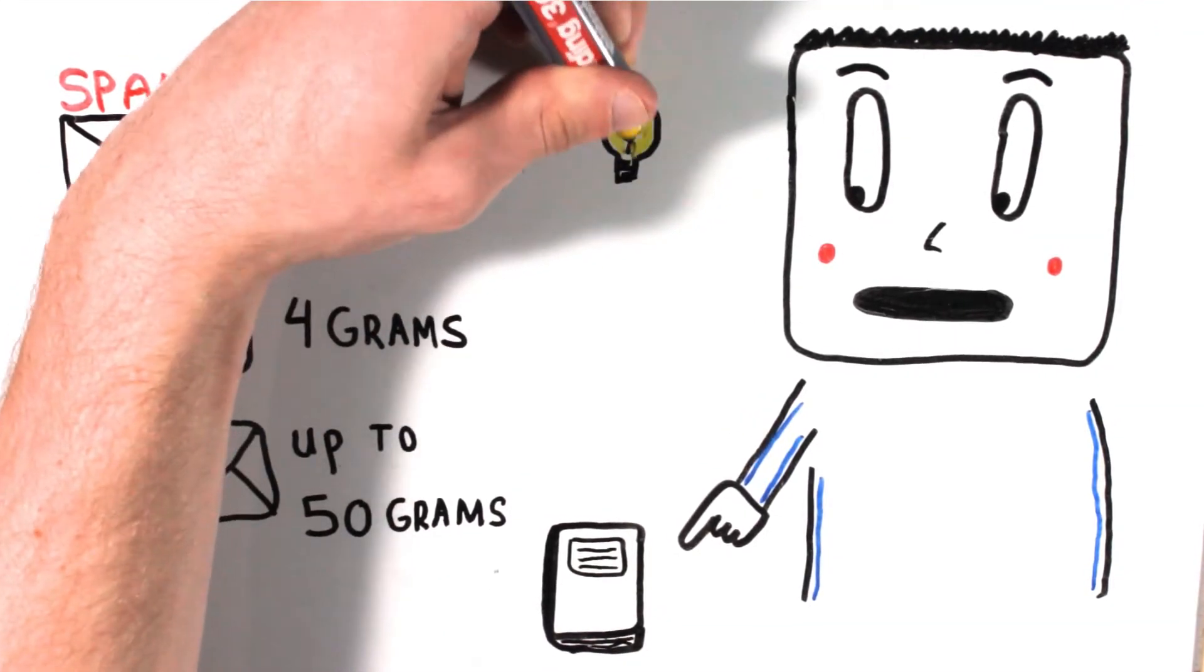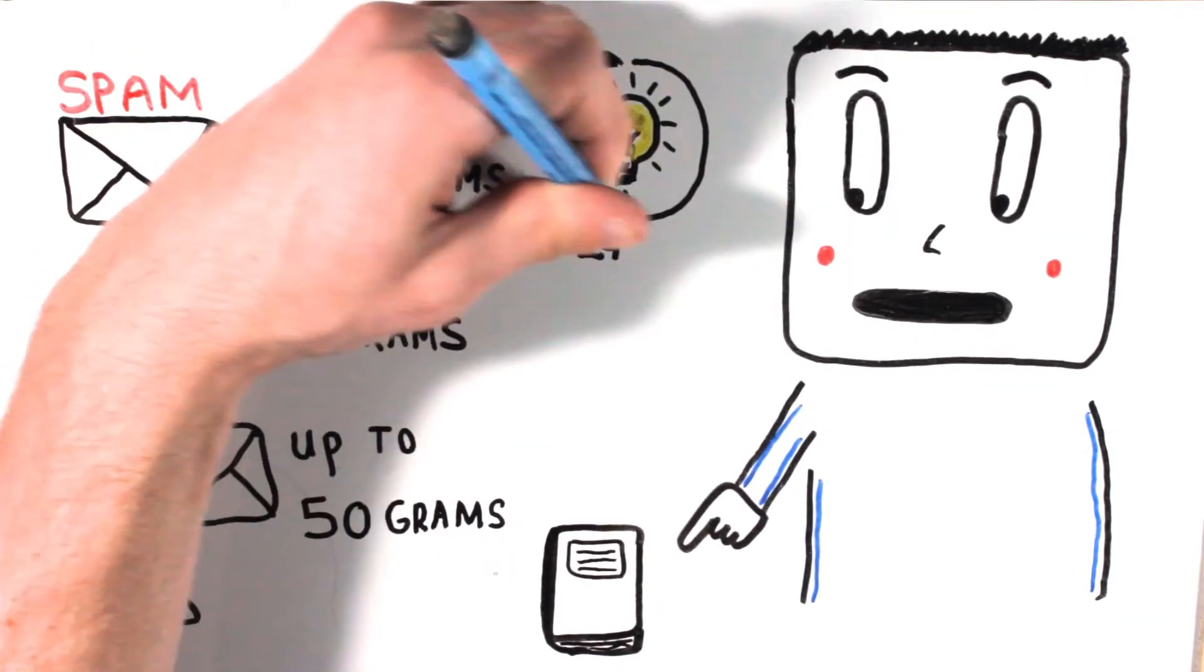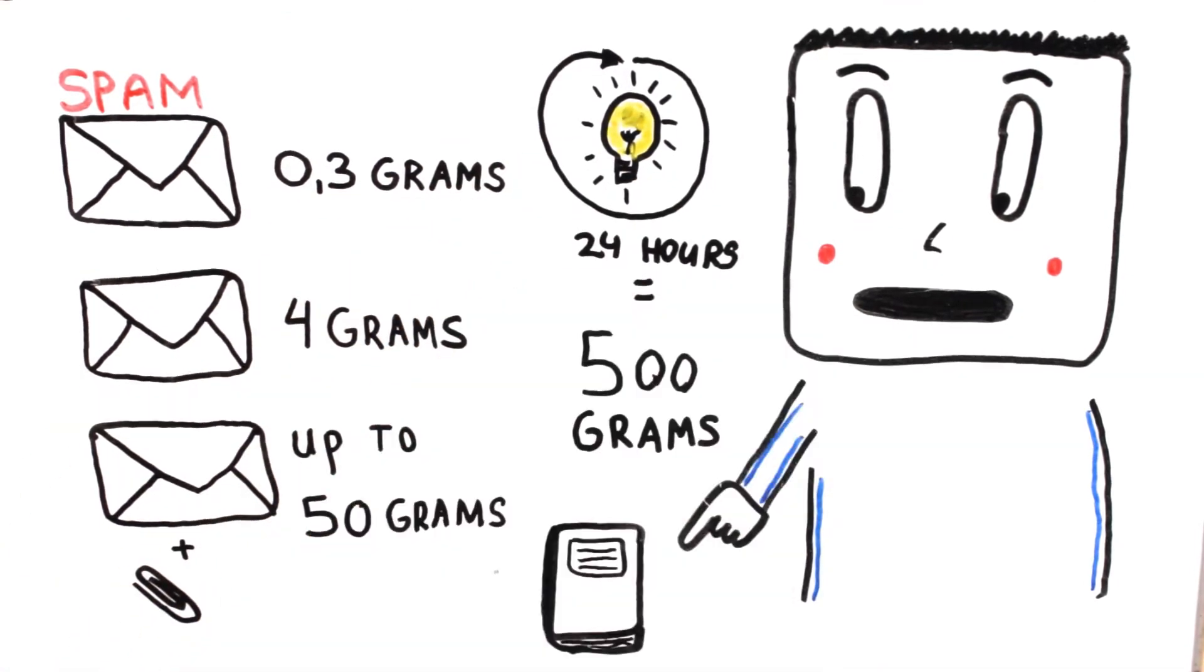For comparison, if you keep an average light bulb on for 24 hours you produce 500 grams of carbon dioxide emissions.